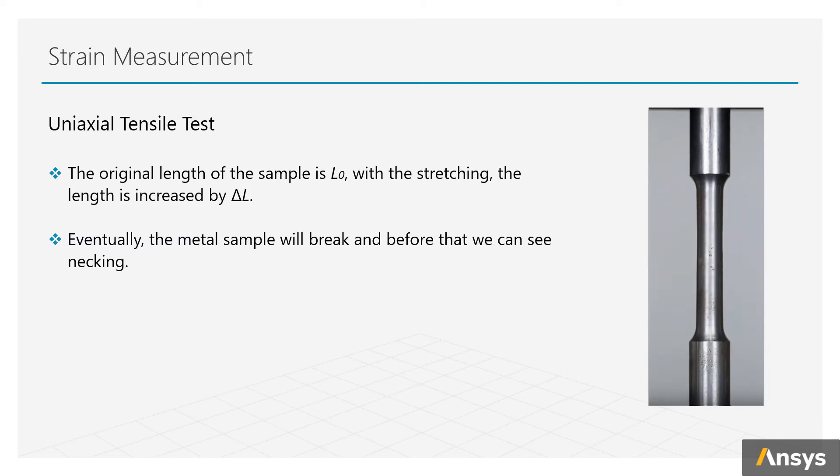Eventually, the metal sample will break, and before that, we can see necking. But our discussion here is limited to uniform tension deformation far before any failure happens. The statement of this mechanical problem can be represented by this sketch with fixed boundary conditions and a displacement control on the top.